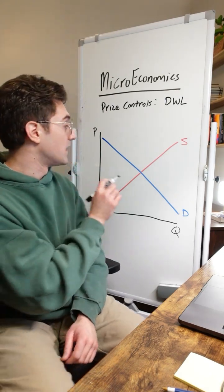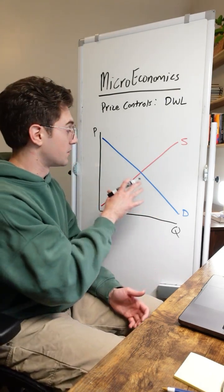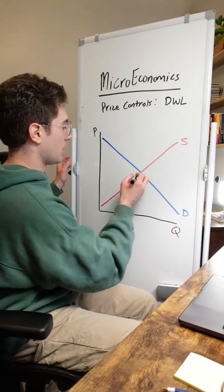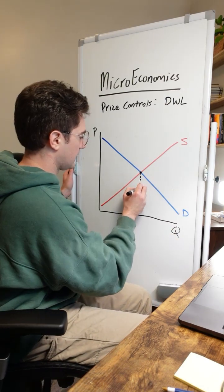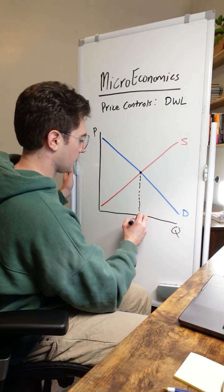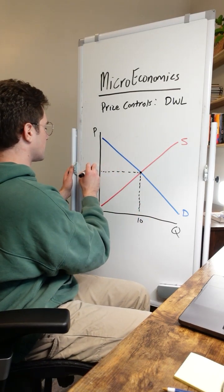All right, now to start this off, let's understand what the surplus looks like in this market without any price control. The market's going to operate right here at this quantity. We'll call this 10 units and this price, we'll call it five bucks.